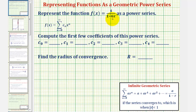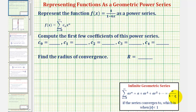We'll do this by using what we know about an infinite geometric series. An infinite geometric series in this form converges if the absolute value of r is less than one, where r is the common ratio, and the infinite sum is equal to a divided by the quantity (1 - r). Because our function f(x) resembles this formula, if we can identify a and r, we can write the function as a power series.